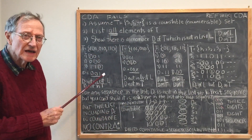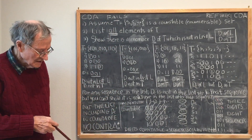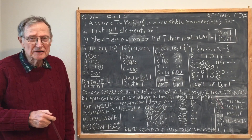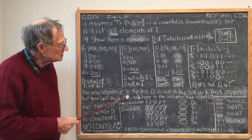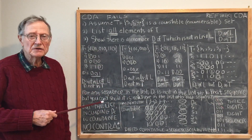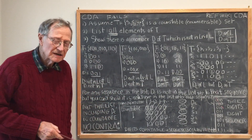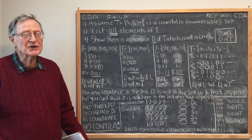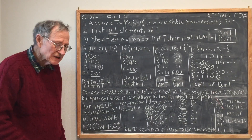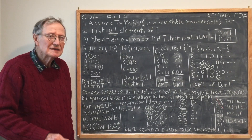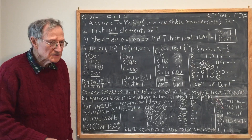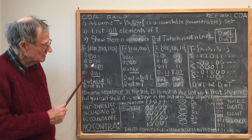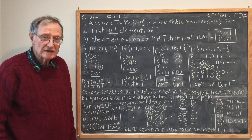Now, every version, every attempt to show that a set is uncountable that I've come across invariably boils down to this argument, even though it's often couched in heavy-duty jargon and highfalutin terms. But if you plow through it, eventually the argument that the set is uncountable boils down to Cantor's diagonal argument, which obviously fails.